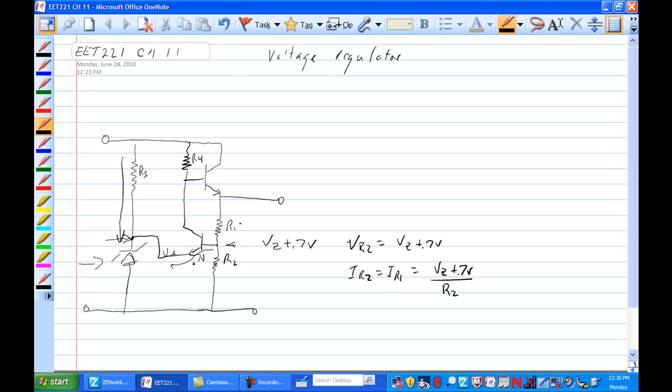To restate, what do you imagine the current through I R1 is? I R1 is equal to I R2. There's no other place for it to go. Base current here is very small, so we're going to ignore it.